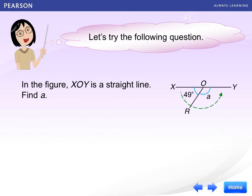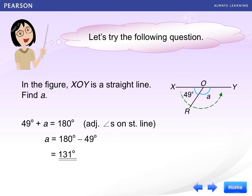Let's try the following question to find A. 49 degrees plus A equals 180 degrees, because adjacent angles on straight line. So A can be found as 131 degrees in this case.